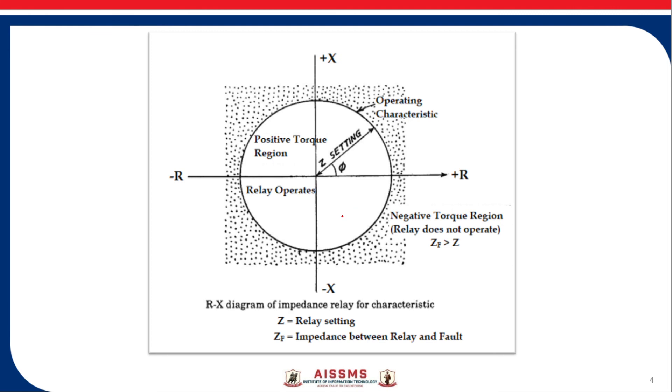RX diagram for this impedance relay: The relay operates for a certain value less than set value of Z. So take Z as a radius and make a circle. The part inside this circle shows the impedance less than predetermined value of Z, and so it is positive torque region and for this region relay will operate.